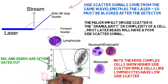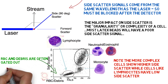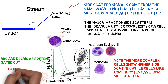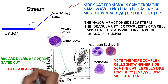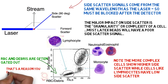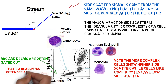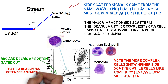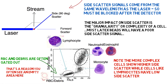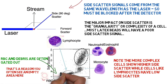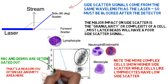We very often gate out red blood cells and debris in the bottom left corner of the dot plot. This is often achieved by settings on the flow cytometer to reduce its sensitivity to small particles.